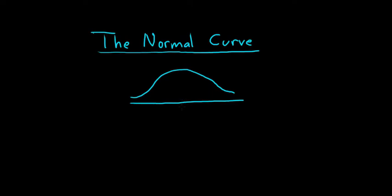In the middle of the curve, we have the symbol mu. Recall that mu is the mean — so mu would be the average or the mean. And then we have another parameter, sigma, which is the standard deviation.